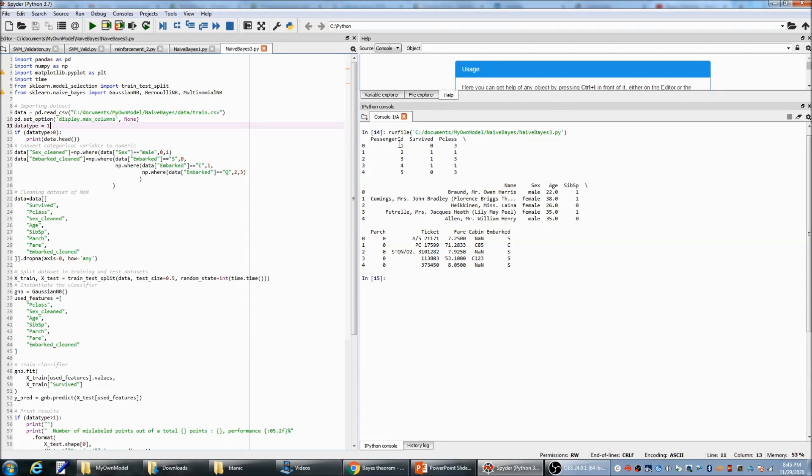In our data set, we have passenger ID. I only display five records here. And survived: zero means they didn't survive, one means they survived. And this is class. Three means it's third class, this is first class. And also, we have their name, sex, age, etc. And we have fare here.